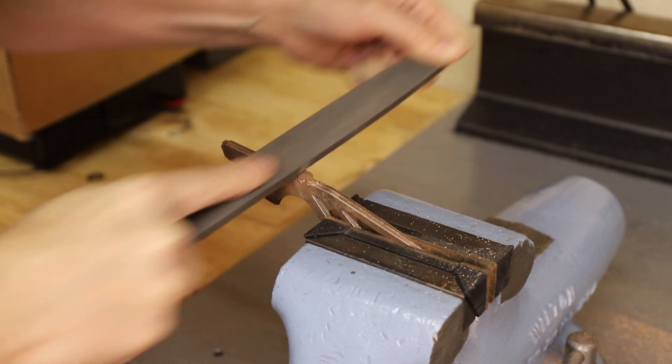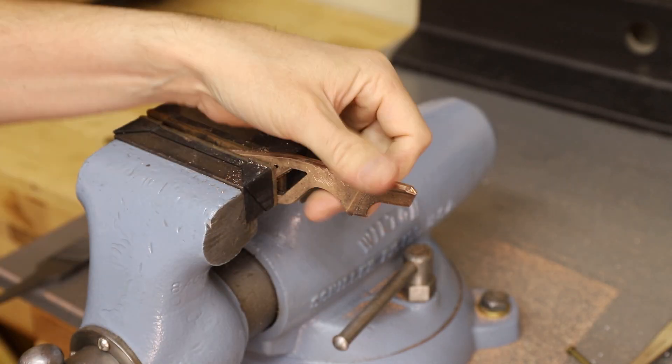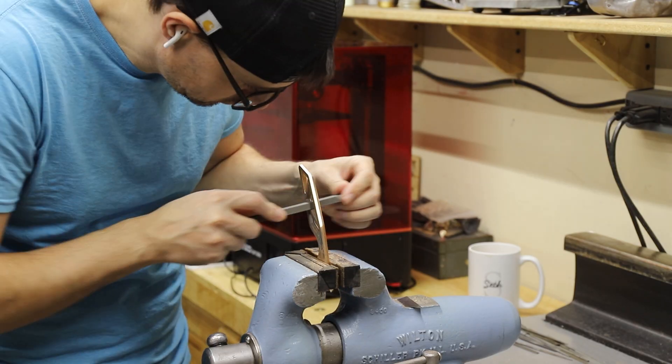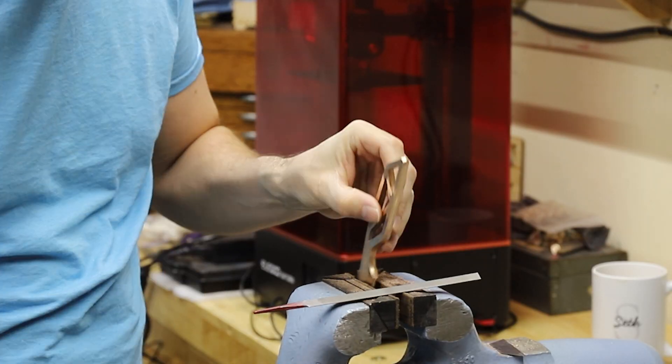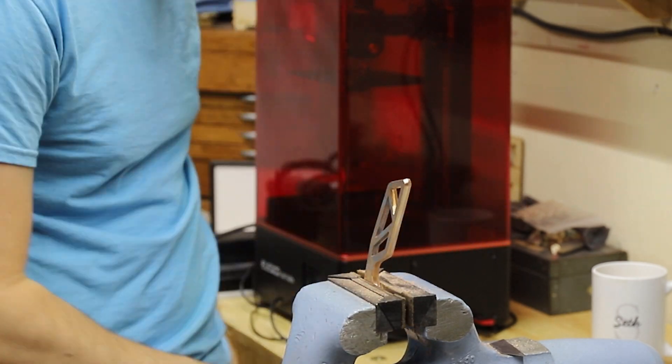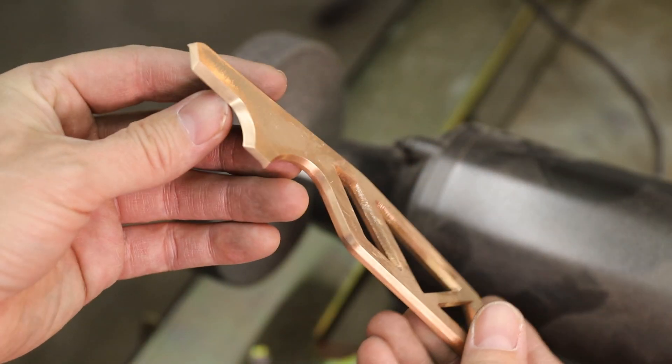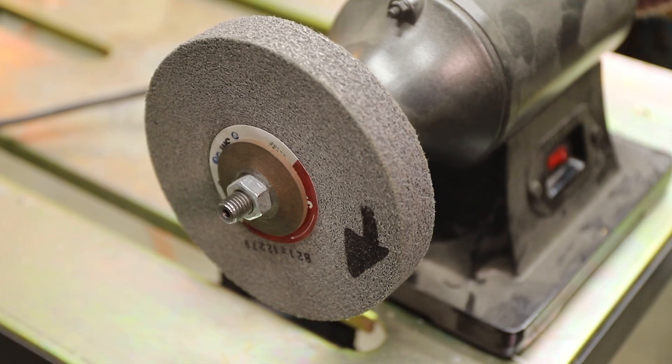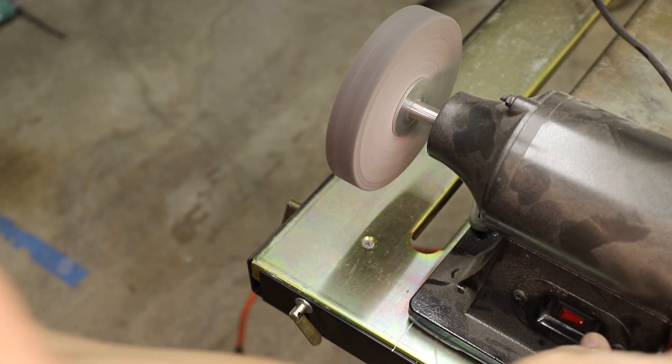This took a few hours of filing to get it looking nice, but I just got into it and it wasn't bad. Next, I used this soft deburring wheel to remove all the file marks and polish it up.